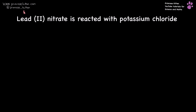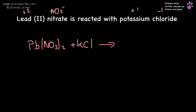Lead(II) nitrate — lead is plus two, nitrate is NO3 minus — is reacted with potassium chloride, potassium is plus one, chloride is minus one. So that is Pb(NO3)2 plus KCl. We're going to end up swapping ions, so we're going to get PbCl2 — that needs to be two because lead is 2+ — and then KNO3. So we're going to need a two in front of the potassium chloride and a two in front of the potassium nitrate.